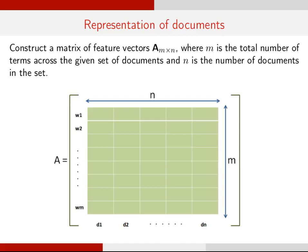We construct a matrix of feature vectors denoted by A. The size of matrix A is m cross n, where m is the total number of terms across the given set of documents, and n is the total number of documents in the set.